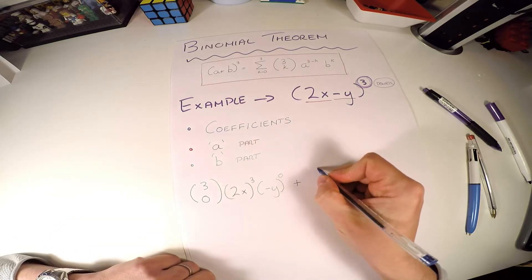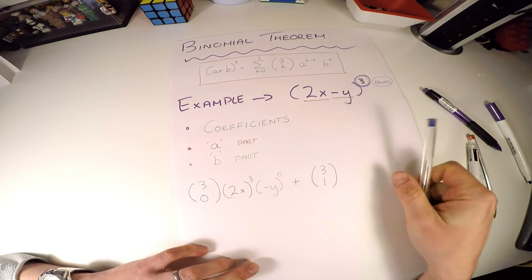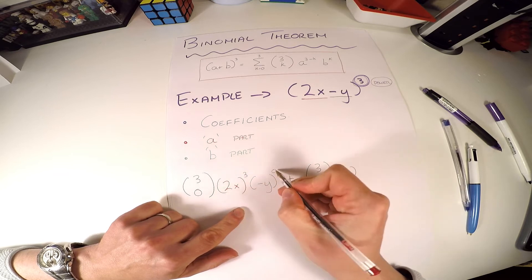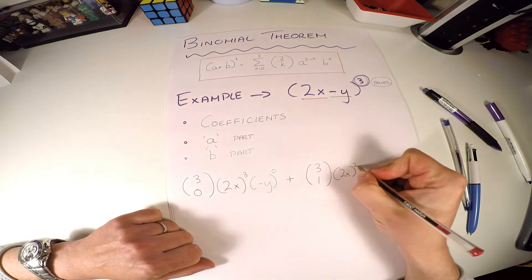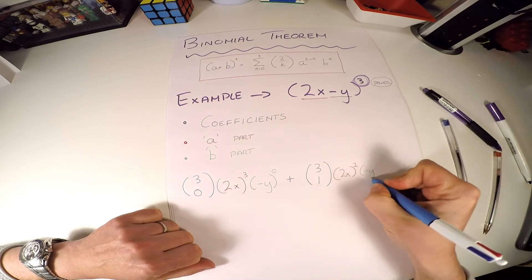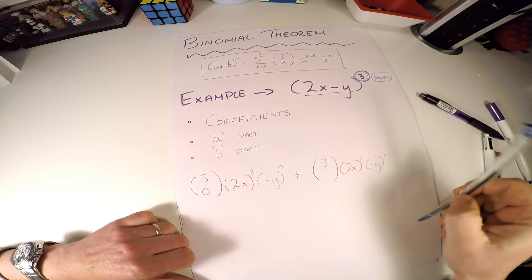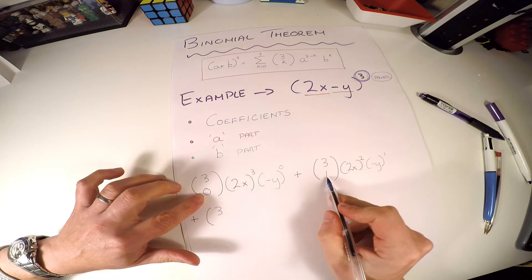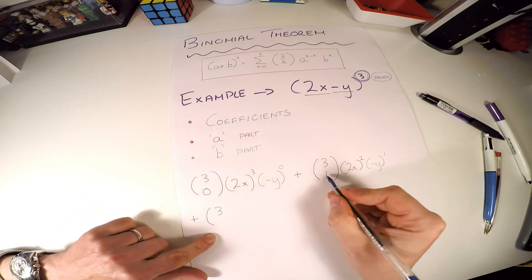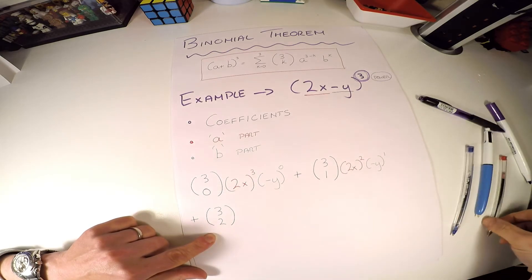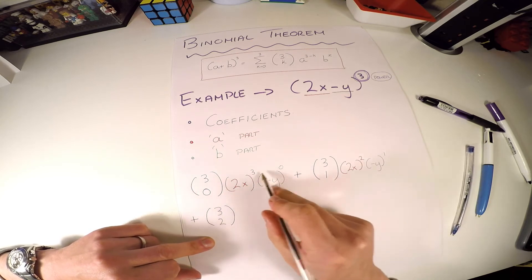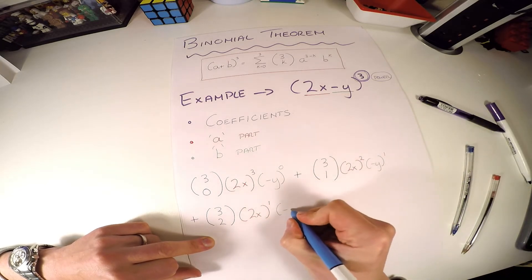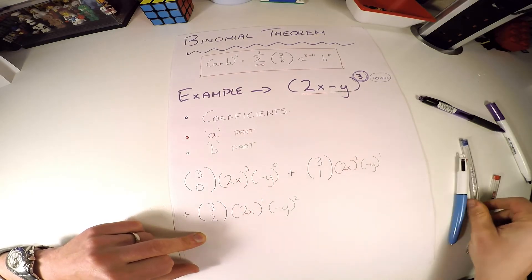The next term is 3 choose 1. My a-part is still 2x, but the power starts going down — from three down to two. My b-part, minus y, goes from zero up to one. Then for the following term, I have 3 choose 2. My a-part, 2x, continues going down — the last one was two so now it goes to one. My minus y is now moving up to the power of two.